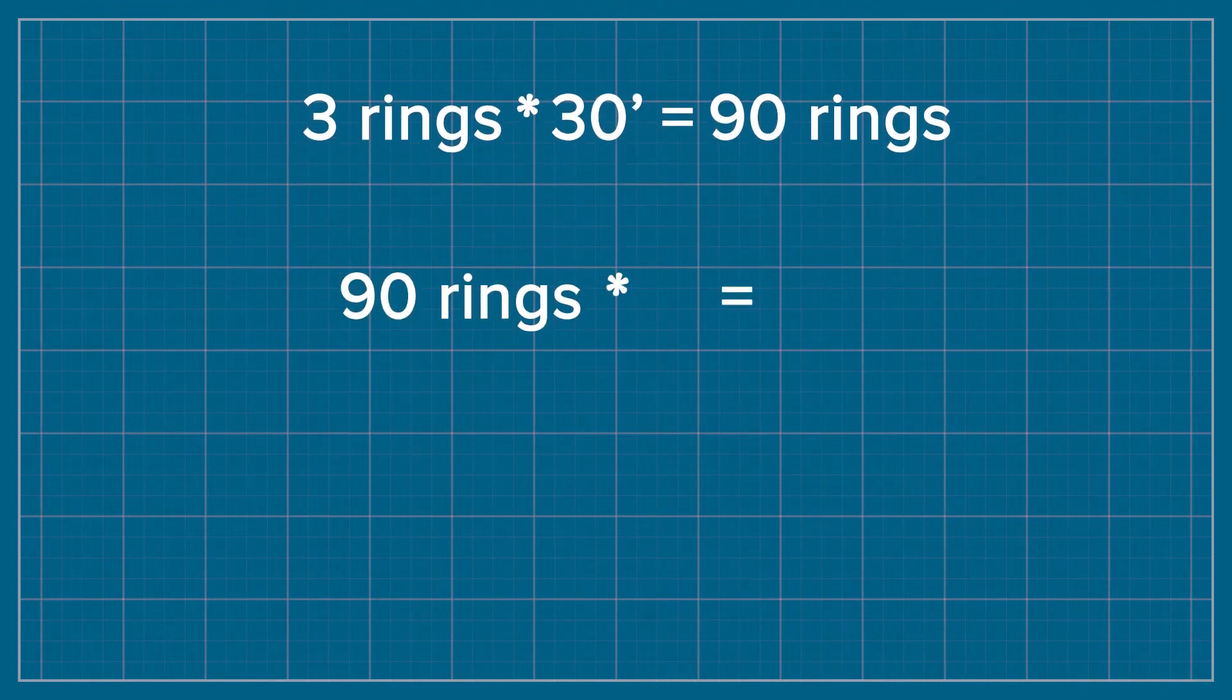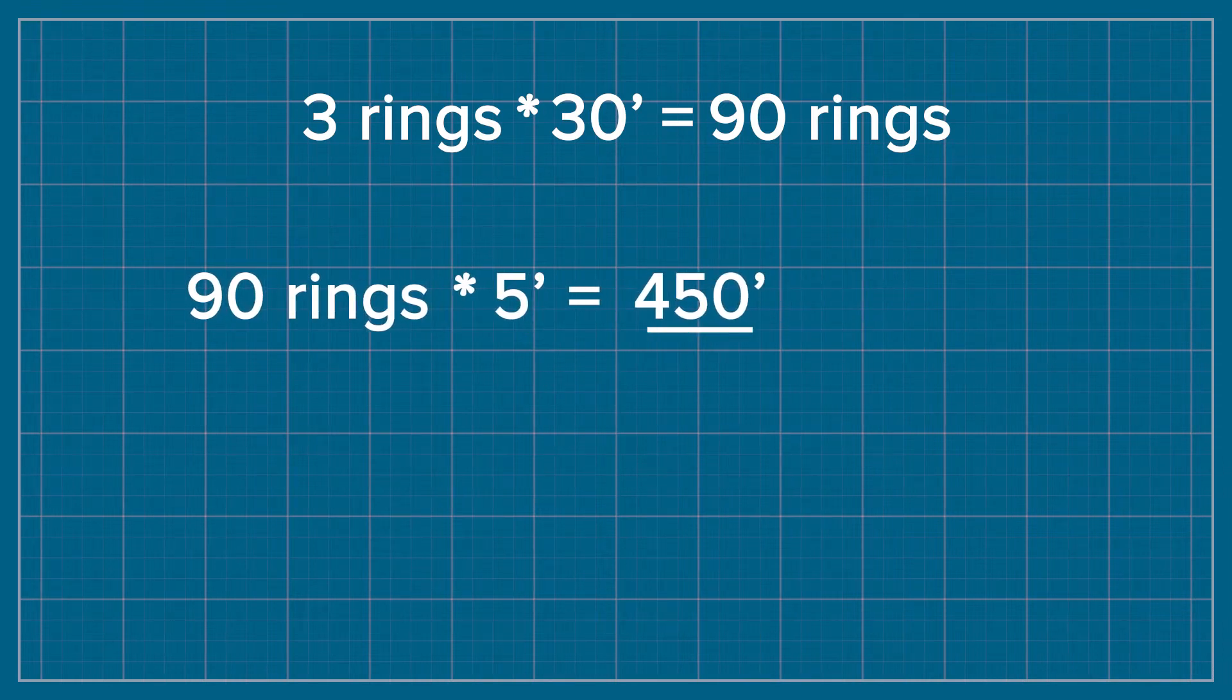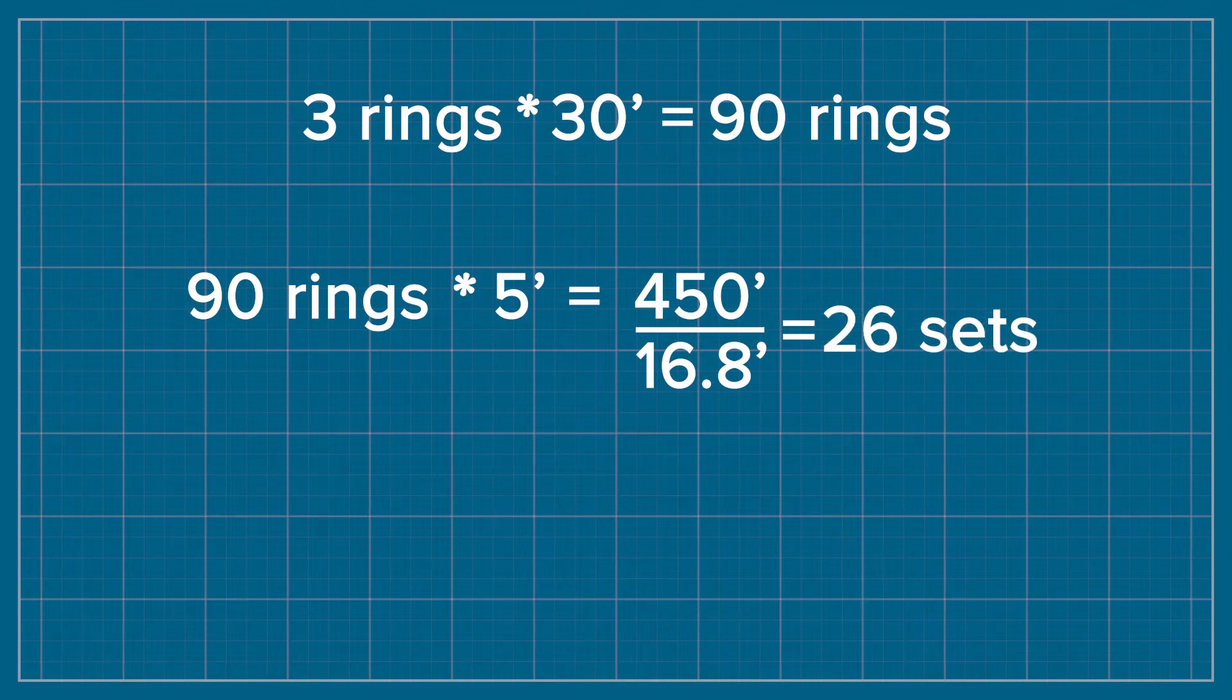Each of those light rings is on average five feet. That's going to be 450 total feet. If you divide that by the length of each light set, which is 16.8 feet, that's going to give you 26 sets of lights to go up the entire trunk on a very tight four-inch spacing.